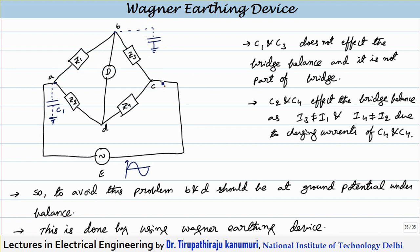This point number C also — between point C and earth, one more capacitance will be formed. Let us take it as C2. This capacitance between point B and earth is C3, and similarly between point number D and earth, one more capacitance will be formed with respect to the ground. This I am taking as C4.